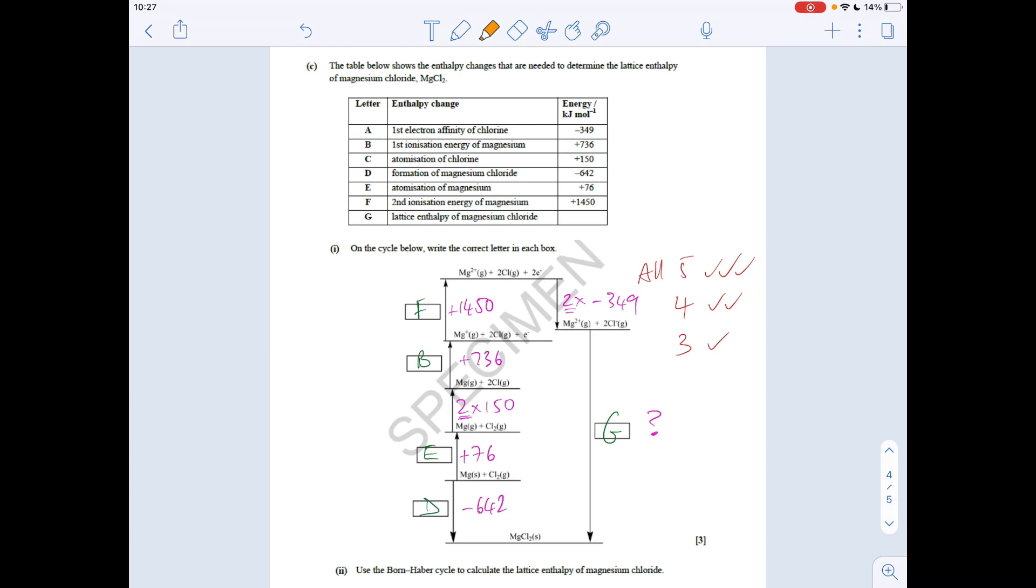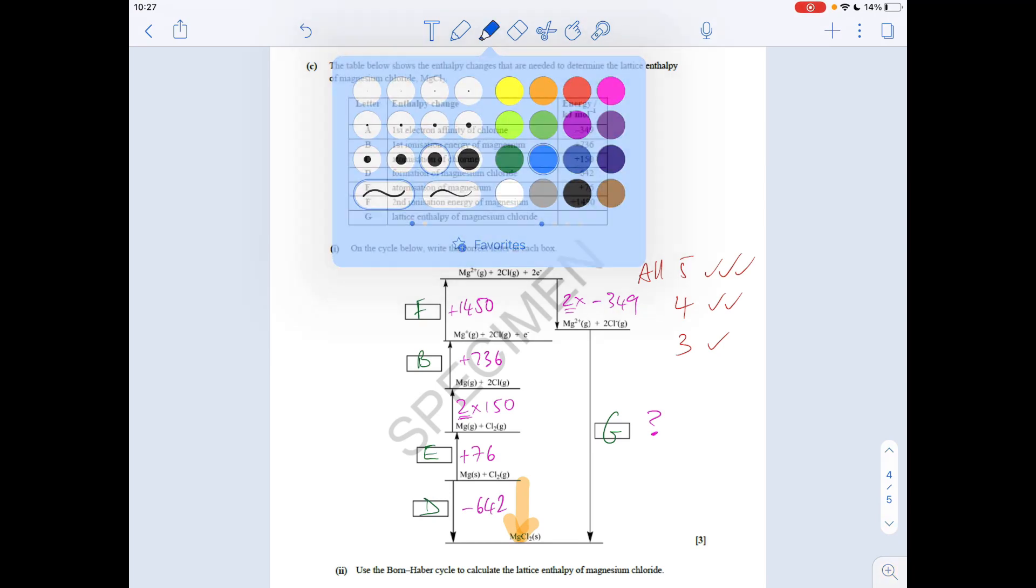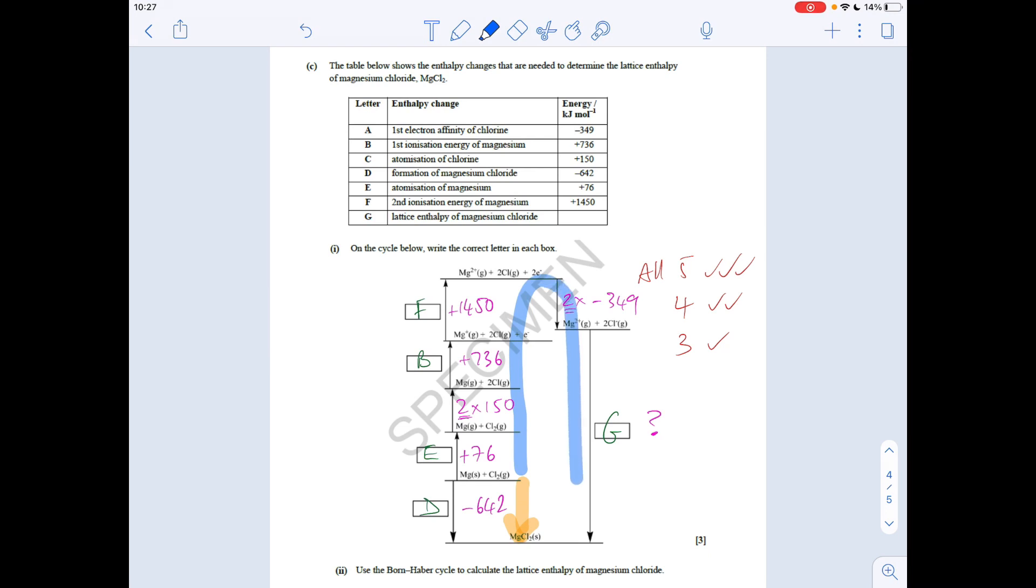So the way I explain these is just sort of a basic Hess's law. We've got two routes going from elements to the ionic lattice. So route one, let's say, is that orange route. And if I just change colour of the pen, go for blue - route two is all of those changes there. Hess's law basically says that the sum of the routes is the same, because we're starting and finishing at the same place. So all we need to do is put these numbers into the calculation and then solve for G.